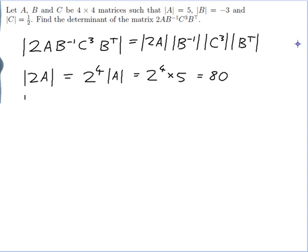Now for the determinant of B inverse. Well, my laws tell me that this is 1 over the determinant of B, which is 1 over minus 3, which is minus a third.